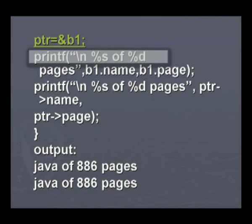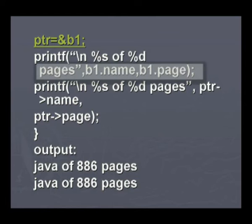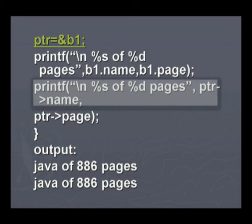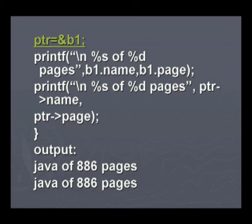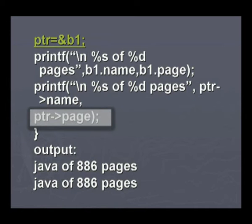When we want to display the contents using the general variable, we simply use the dot operator — b1.name and b1.page. When we want to display the contents using the pointer variable, we have to use the arrow operator — pointer arrow name, pointer arrow page. That is the difference in the way we access the contents of a structure using pointers. This is a simple program just to display the contents, but even for complex applications when we are passing pointer variables to functions, when we want to access the contents, we use this arrow operator.